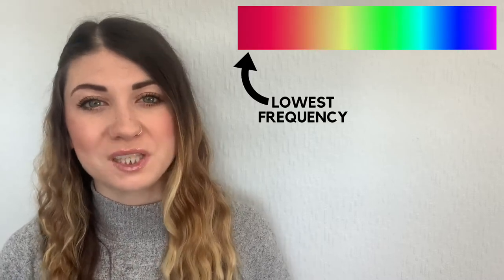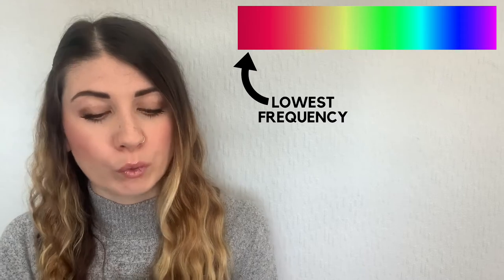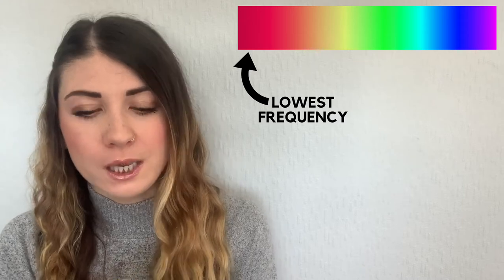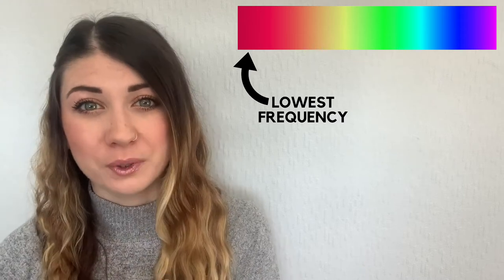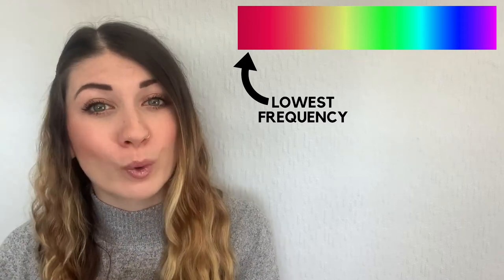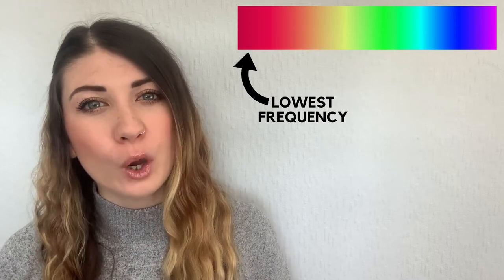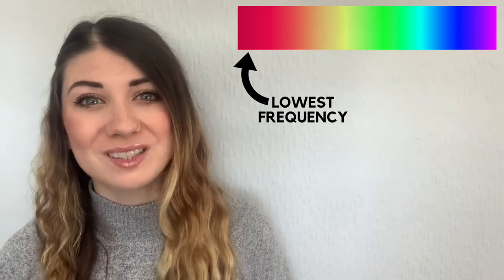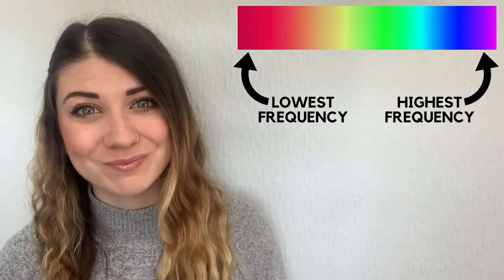With the visible light spectrum, the lowest frequency of light produces a red colour, going all the way through orange, yellow, increasing in frequency to green, blue, indigo, all the way to the highest frequency of light which is violet.